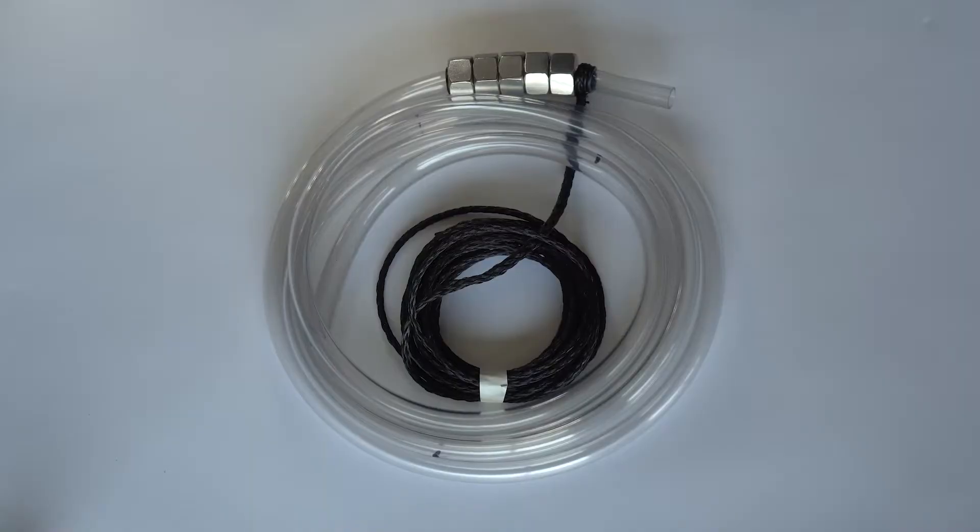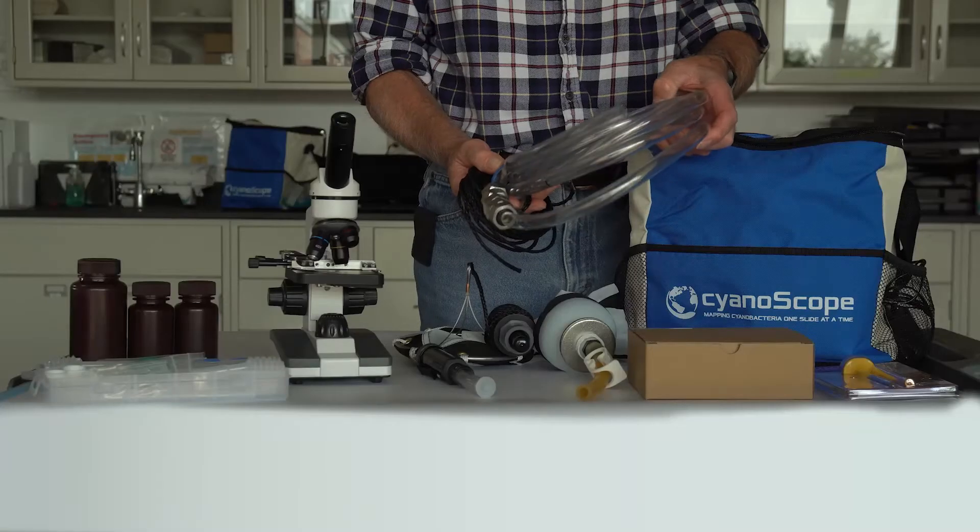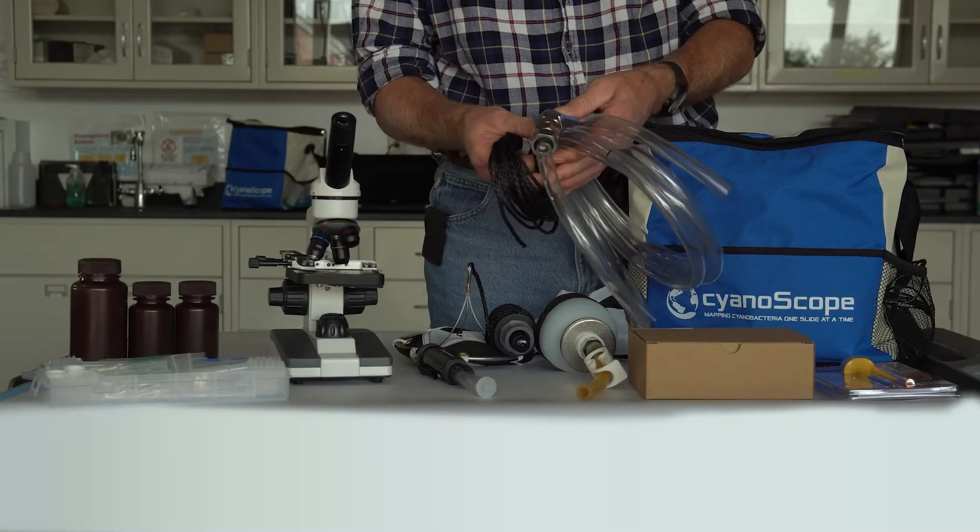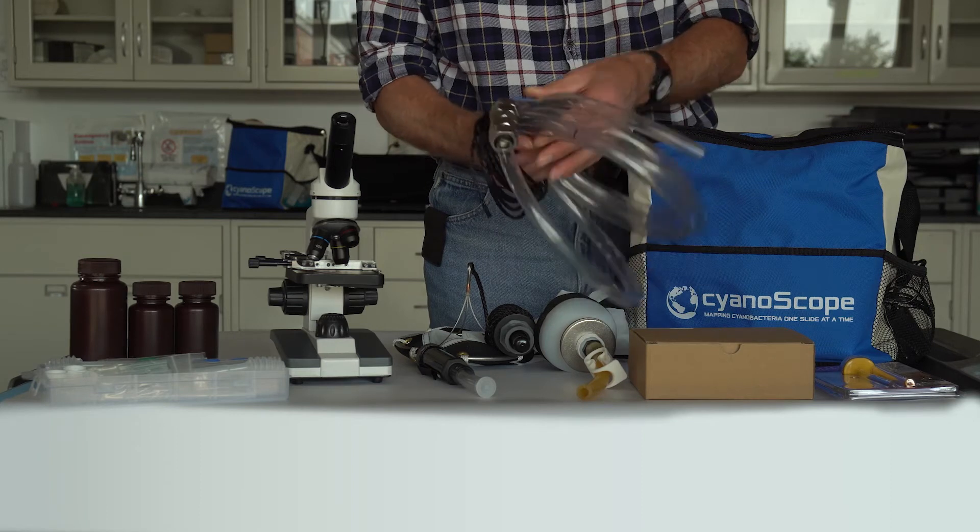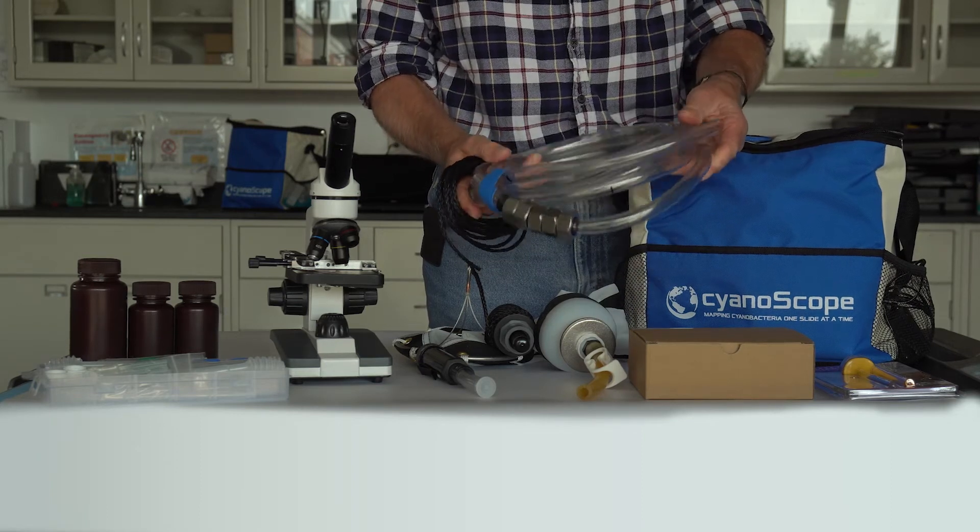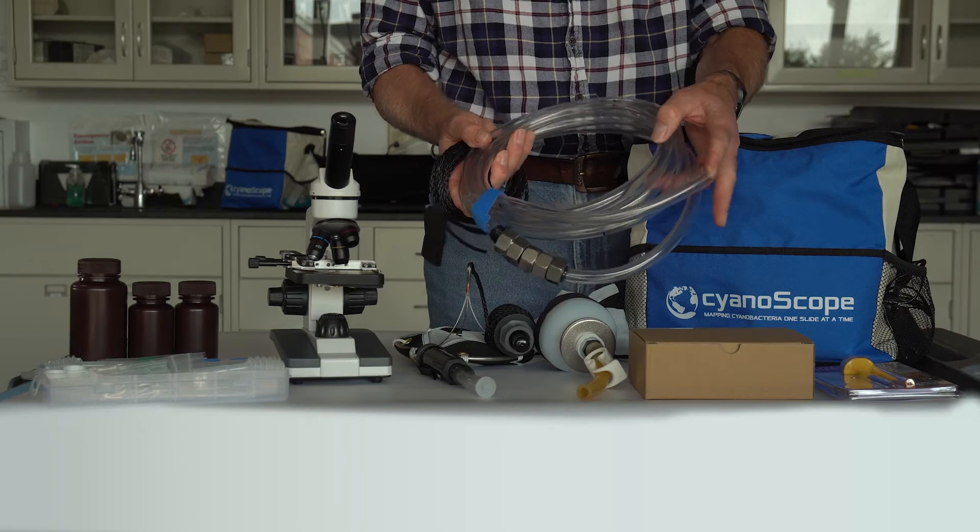The integrated tube sampler will collect a sample that reflects the concentration in the water column. To help with measurements, the tube has markings indicating depths of 1, 2, and 3 meters. Again, be careful not to send the tube in so deep that it makes contact with the bottom of the water body.